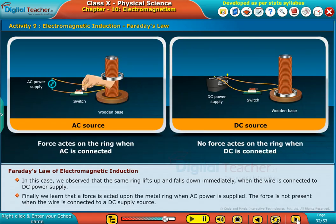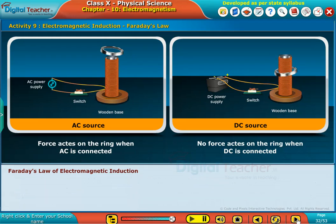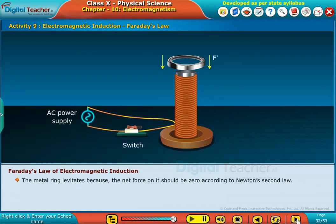Finally, we learn that a force is acted upon the metal ring when AC power is supplied. The force is not present when the wire is connected to a DC supply source. The metal ring levitates because the net force on it should be zero according to Newton's second law.